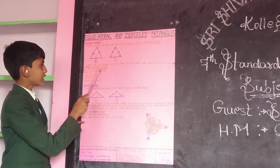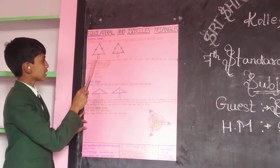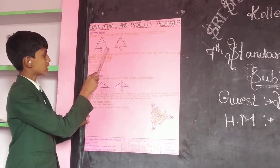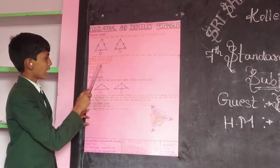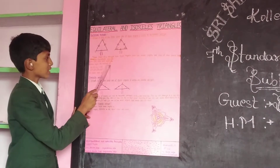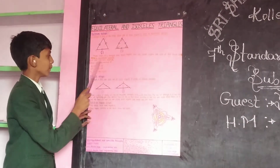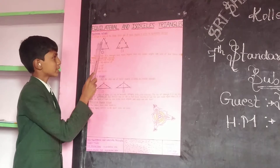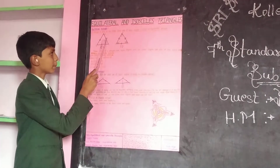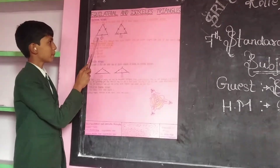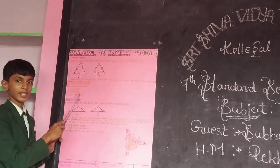In an equilateral triangle, all sides have the same length and each angle is equal to 60 degrees. Angle A plus angle B plus angle C is equal to 180 degrees.